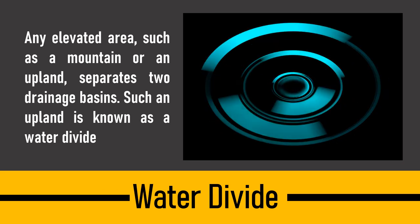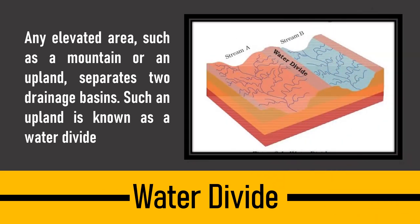As shown in the picture, there is stream A and stream B with an elevated area in between. The river flowing in stream A goes into different channels and directions. One single river is bifurcated by the water divide — the elevated area in the center — into two different segments: stream A and stream B. Remember, water divide means any elevated area that divides the river into different channels.